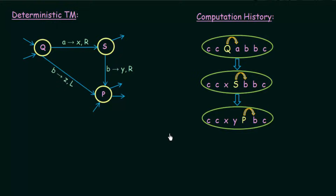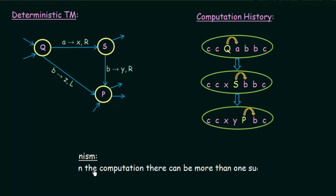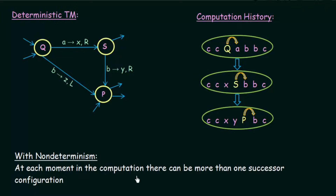With non-determinism, at each moment in the computation there can be more than one successor configuration. In deterministic Turing Machines the configuration forms a linear chain, because for every input there is only one move to another state. But in case of non-determinism, at each moment of computation there can be more than one successor configuration, since in a particular state on getting a particular input we can go to more than one state.